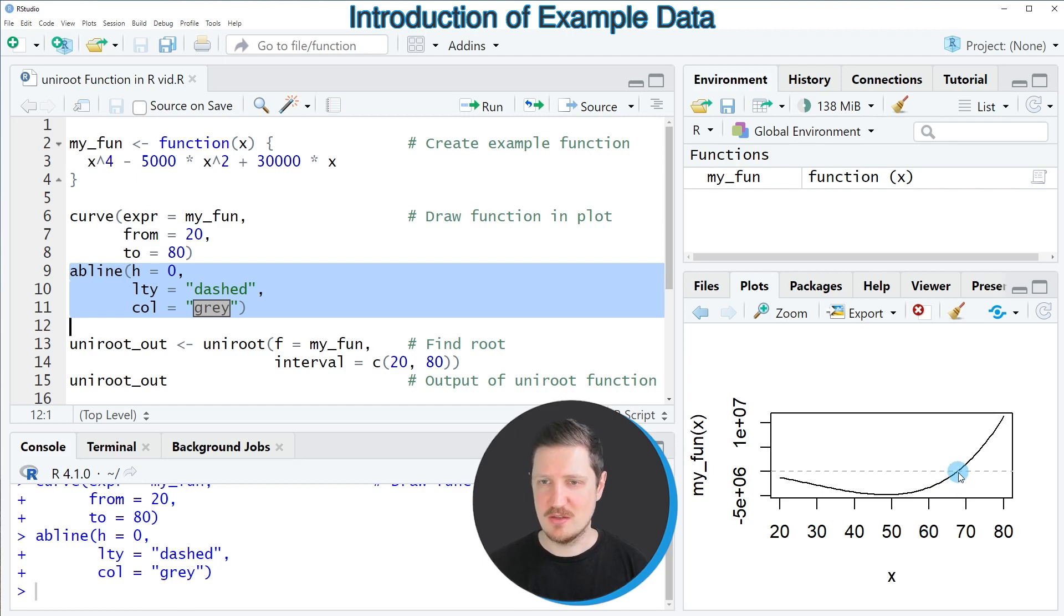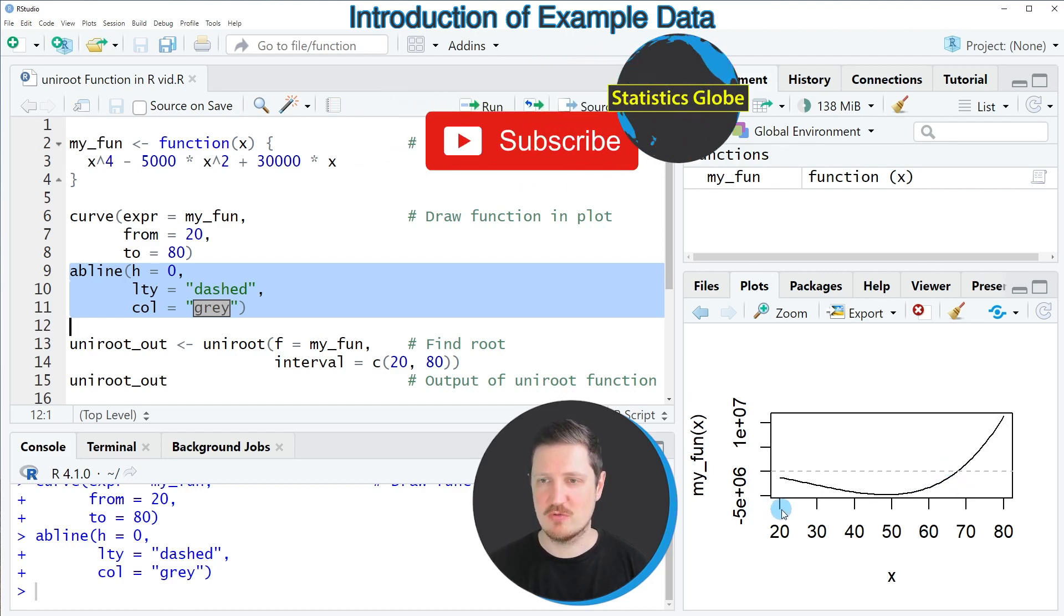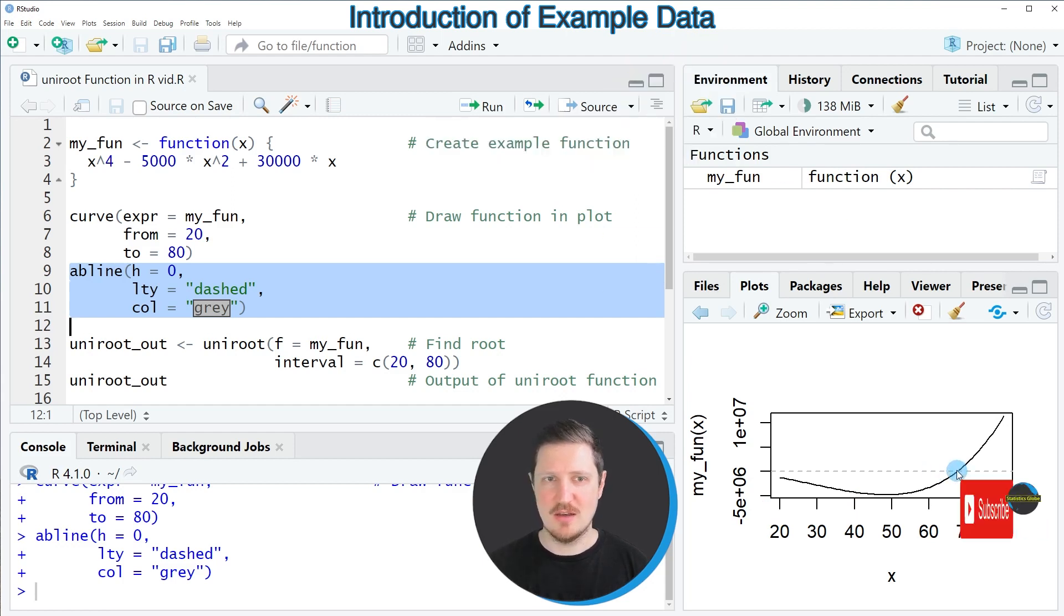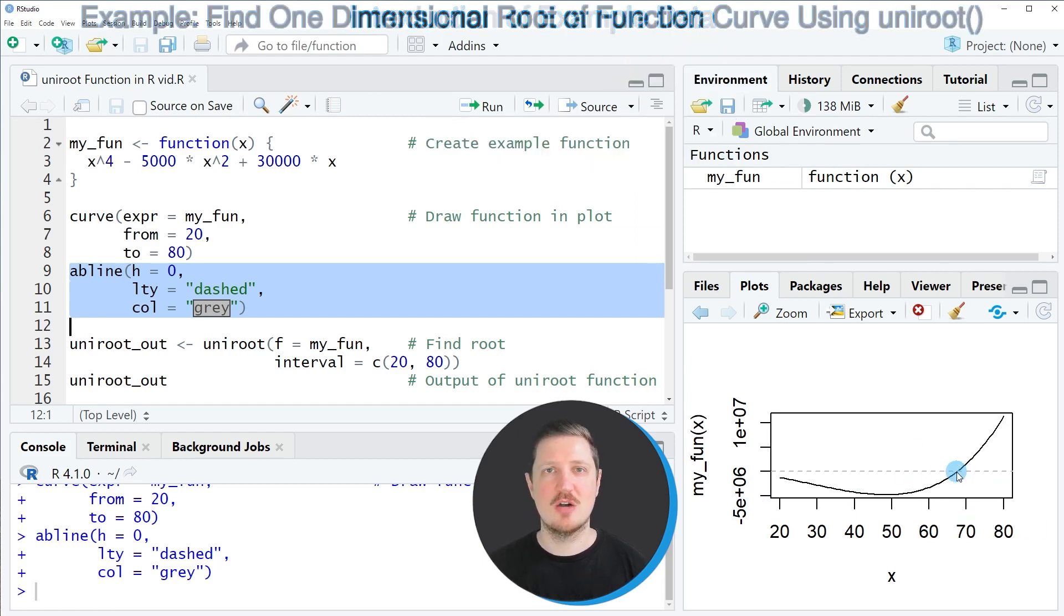Now as you can already see, there is one root in our function curve between the range from 20 to 80. In the next step, I will show you how to apply the uniroute function to identify the exact position of this point.